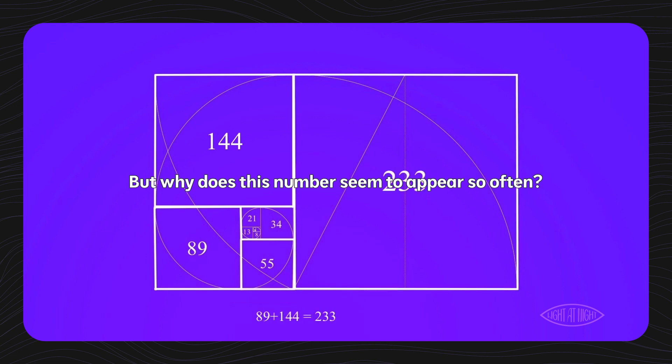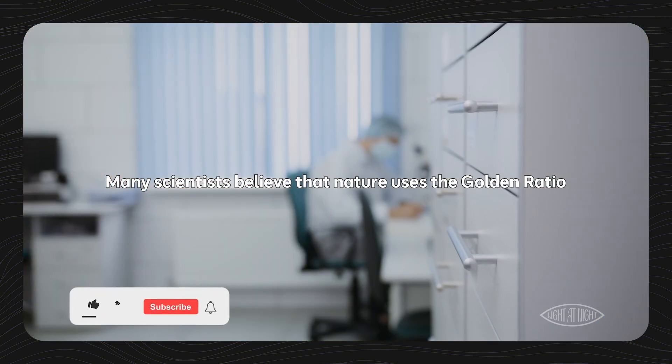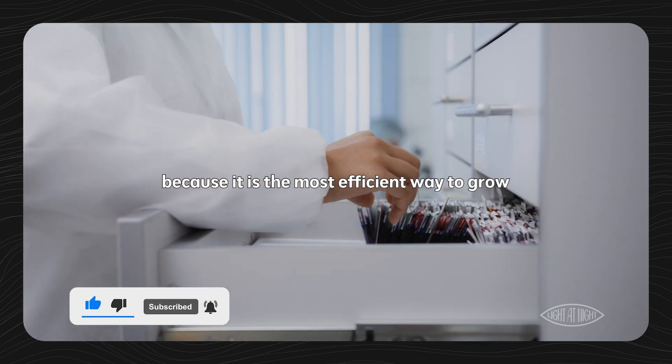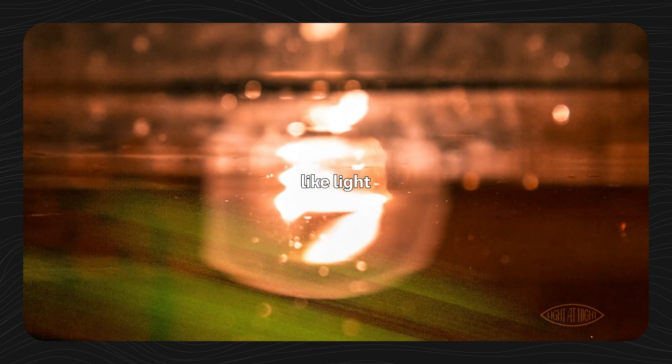But why does this number seem to appear so often? Many scientists believe that nature uses the golden ratio because it is the most efficient way to grow and distribute resources, like light or water, in plants.